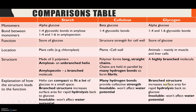For glycogen: it's also a branched structure, but even more highly branched than amylopectin. This means it can be even more rapidly hydrolyzed back to glucose — an advantage because it's a storage molecule in animals, and animals need to move. Movement requires energy, and glucose is needed in respiration to release that energy. That is why animals have a more highly branched store of glucose compared to plants.